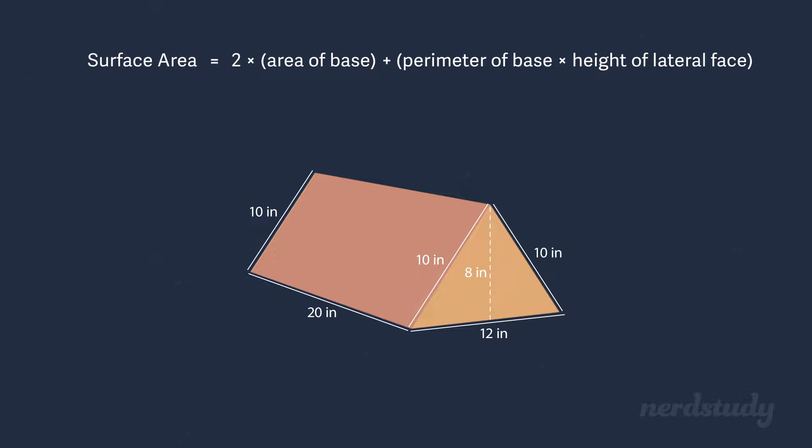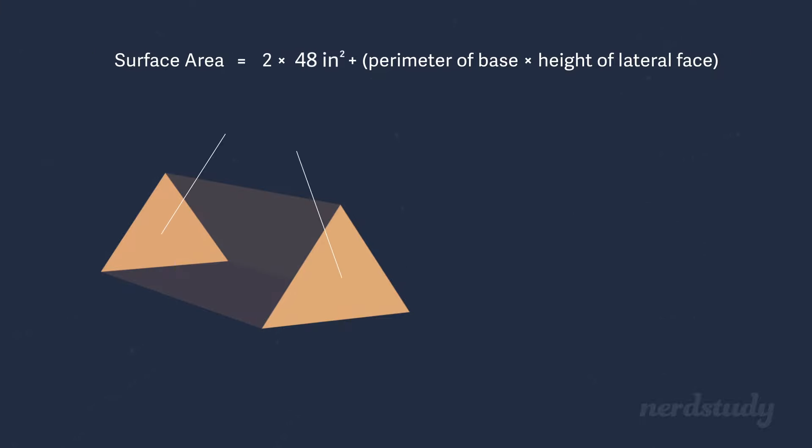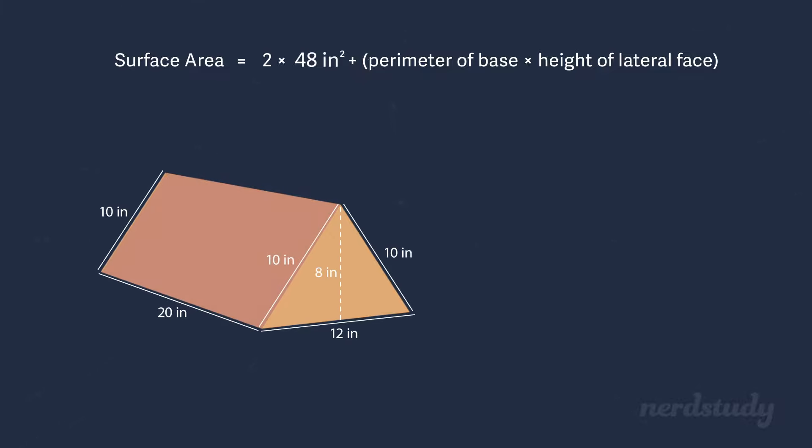So these are the dimensions for this triangular prism. We can find the area of this triangular base by using the formula for area of a triangle, which was base times height divided by two. So we plug in the info to get 12 times 8 divided by 2, which equals 48 inches squared. So the area of the base is 48 inches squared. But don't forget that we've got two of these bases on the ends of this triangular prism. Thus, we would multiply the area of 48 inches squared by two. So far, we're at 96 inches squared.